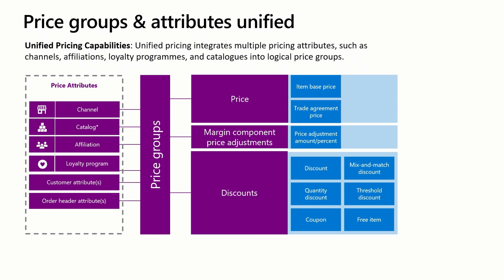Consider a promotional scenario. You're running an online promotion for members of the Contoso Rewards Program. You could create a price group that bundles the channel attribute and the loyalty program attribute. You can then apply specific offers such as a free item or quantity discount to this group. This approach ensures that your pricing remains consistent and accurate regardless of which customer segment or channel is involved, providing a unified experience across all products.